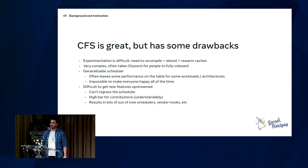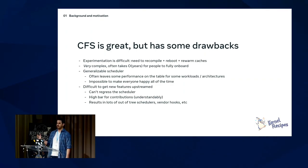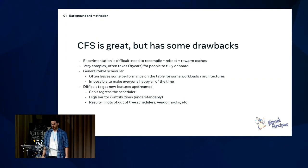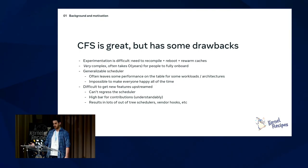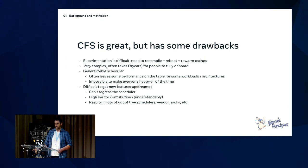It's also very difficult to get features upstreamed in CFS — you can't regress the scheduler at all, and there's a very high bar for contributions. It's not uncommon to work on a feature and have it not get merged if it doesn't quite meet the bar. Because of this, there's a lot of out-of-tree code: out-of-tree schedulers for gaming, vendor hooks for Android, and the Walt CFS thing. CFS works great, but the scheduling ecosystem is definitely not all roses.